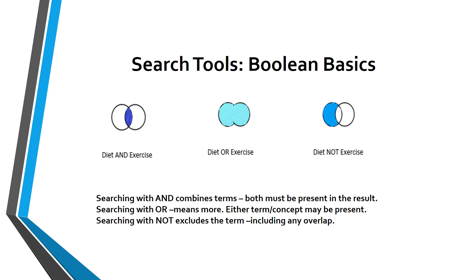While searching, you may want to use Boolean operators. These operators, or conjunctions, are used to assist in the search. See the circles, known as Venn diagrams, on the screen. AND combines terms — it's where the circles overlap. So if you search for systematic reviews on diet and exercise in weight loss, both concepts must appear in the review. OR gives you more — you'll get results featuring either term. This is both circles completely filled in, so you will see reviews that are about diet or about exercise, but not necessarily both in the same review.